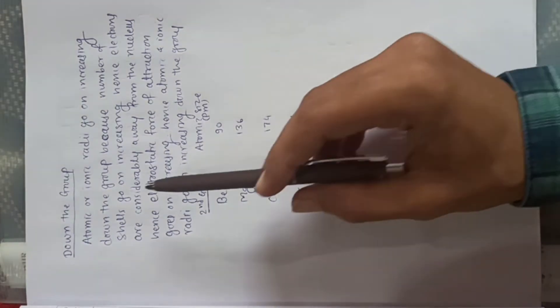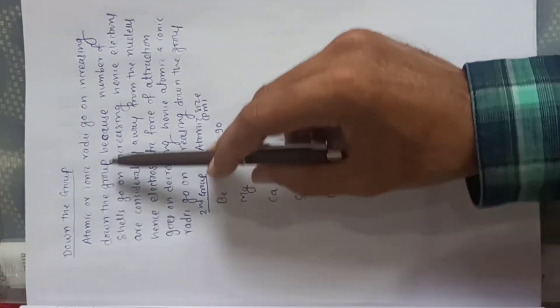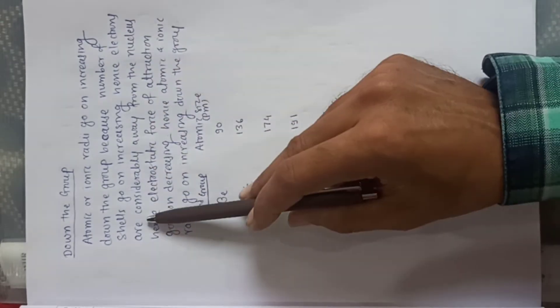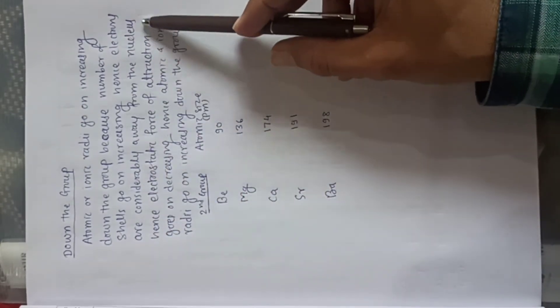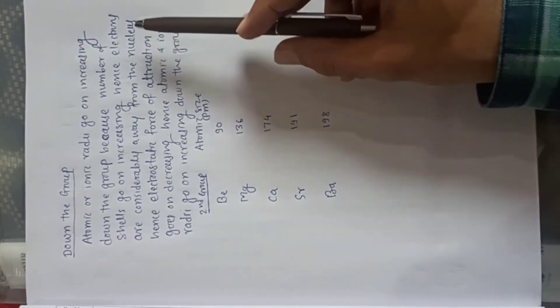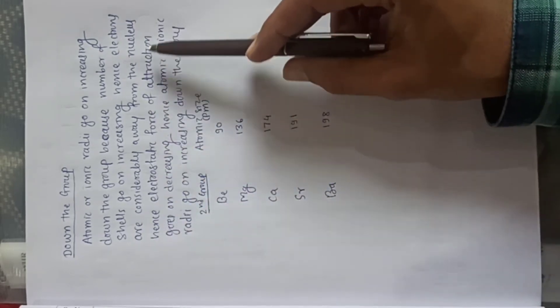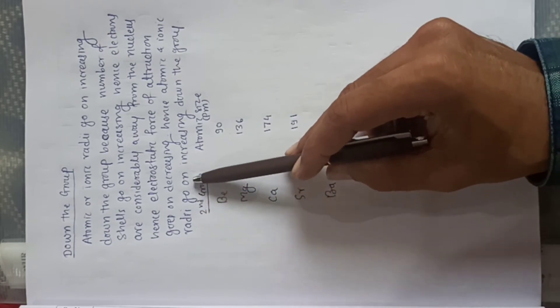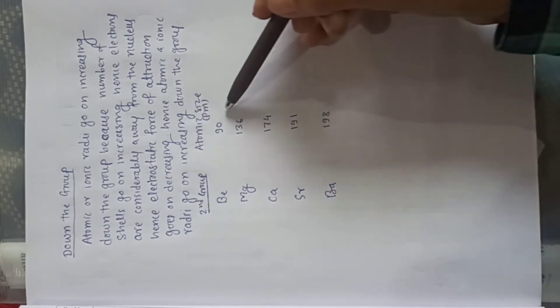As the number of shells goes on increasing, electrons are considerably away from the nucleus. Hence, the electrostatic force of attraction goes on decreasing. Hence, atomic and ionic radii will go on increasing down the group.